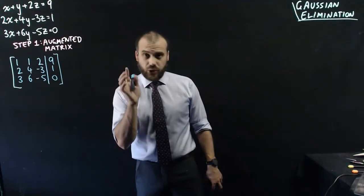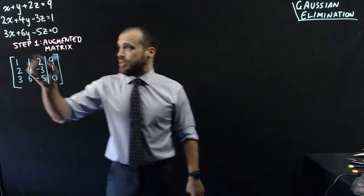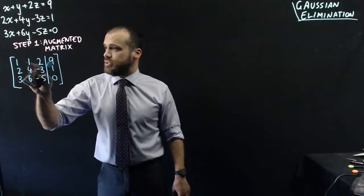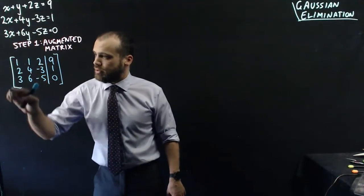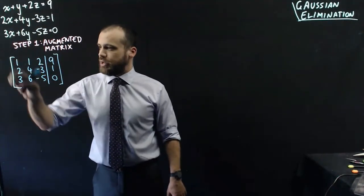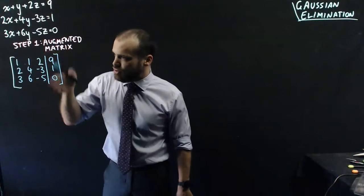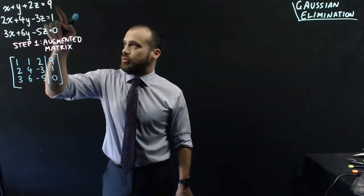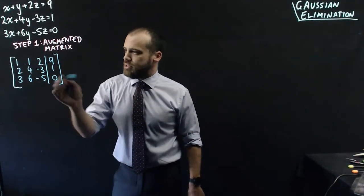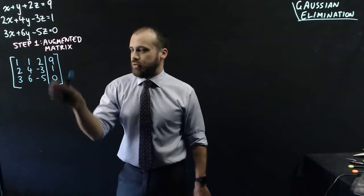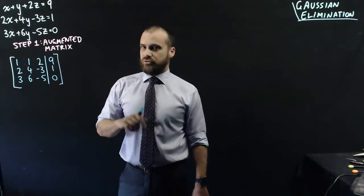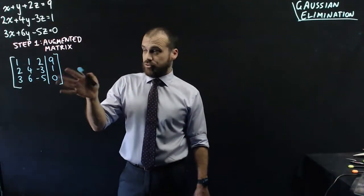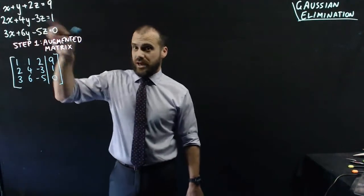Now step one is what we call an augmented matrix. Basically we put all of our coefficients into this bit here, with our familiar matrix bracket, and then just a straight line, and then all of those numbers - 9, 1, 0 - on the right of that line, followed by our little matrix bracket. That is an augmented matrix; it's just a fast way of writing that.